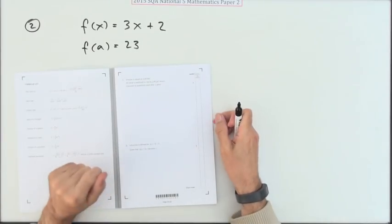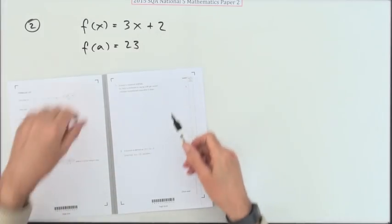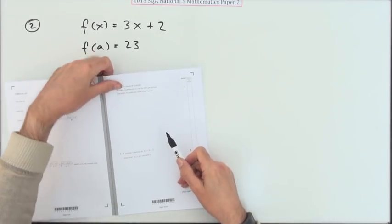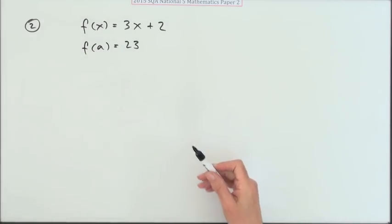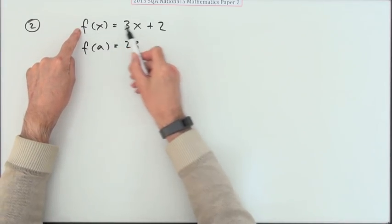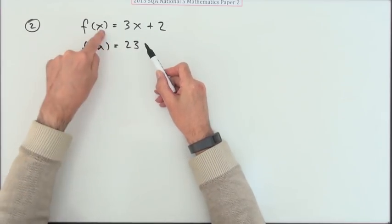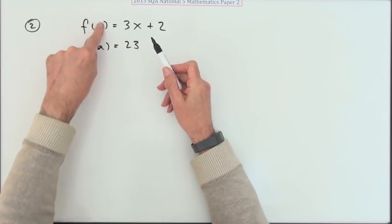Number two then, what have we got in this one? A function is defined by f of x is 3x plus 2, given that f of a is 23, what's a for two marks. But what this function does is you feed it something and it takes that something, multiplies it by three and adds on two. That x is just an example. It doesn't matter what you put in there.